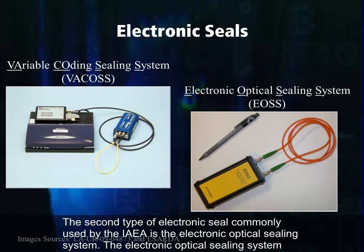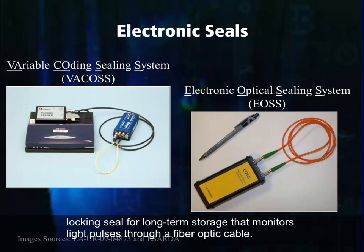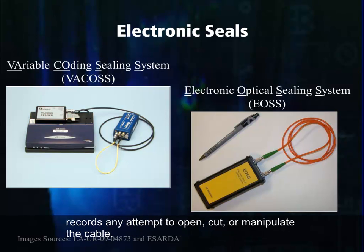The second type of electronic seal commonly used by the IAEA is the electronic optical sealing system. The electronic optical sealing system was designed for the substitution of VACOS seals. Like VACOS seals, the electronic optical sealing system is a reusable mechanical locking seal for long-term storage that monitors light pulses through a fiber optic cable. The seal does not prevent opening and closing; instead, it monitors the fiber optic cable and records any attempt to open, cut, or manipulate the cable.